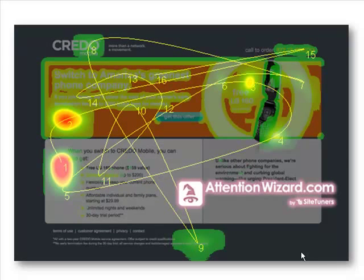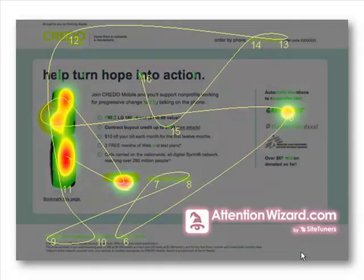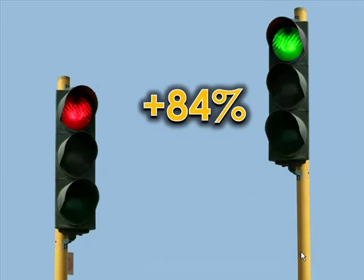On the first page, Attention Wizard showed attention going all over the place — not really focused anywhere in particular. The biggest hotspots were visual artifacts created by the stark contrast and corners of shapes and colors used for the background and surrounding areas. The Attention Wizard heatmap for the redesigned page is very different: most of the attention is on the product, and the other hotspot is on the call to action. This new version resulted in 84% better performance when they ran their email campaign.